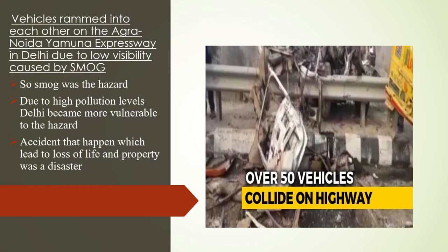You must have heard the news where vehicles rammed into each other on the Agra-Noida Yamuna Expressway in Delhi due to low visibility caused by smoke. So, smoke was a hazard. Due to high pollution levels, Delhi became more vulnerable to the hazard. The accident that happened, which led to loss of life and property, was a disaster. So, when hazard meets vulnerability, disasters are bound to occur.